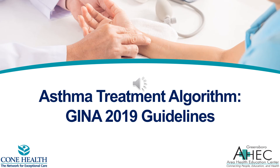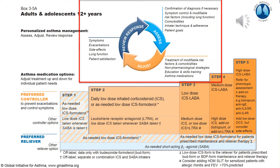Hi everyone! Today we are going to review the most up-to-date algorithm for the treatment of asthma, which came in last year in the GINA 2019 guidelines. Here you can see a page taken directly from the GINA 2019 guidelines — the algorithm for treatment of adults and adolescents greater than 12 years of age with asthma.